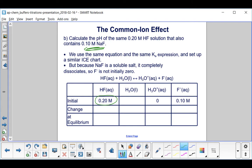That's a soluble salt, meaning that it dissociates completely into Na plus and F minus. We can't say that the initial concentration of F minus is zero. We have to account for it. The initial concentration of F minus is 0.10 molar.